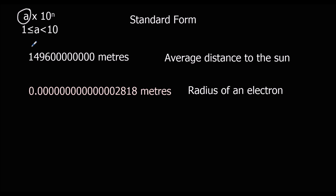The first thing we're going to look for is our number between 1 and 10. It's kind of like, where do I put the decimal point? So it's going to be 1.496. So 1.496 times 10 to a power. How many times have I got to multiply 1.496 by 10 to get to this number? Once, twice... eleven times. So this number is 1.496 times 10 to the power of 11.